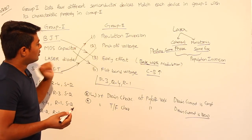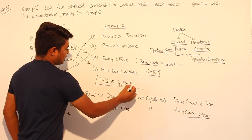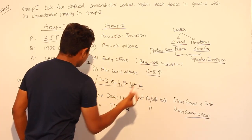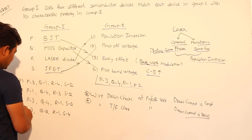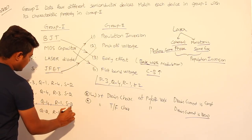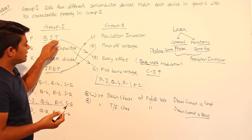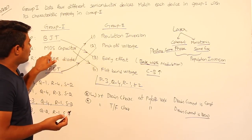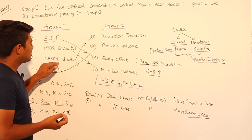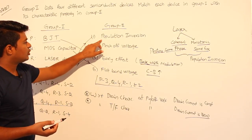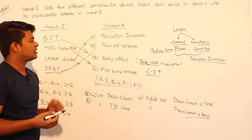So J-FET is related to pinch-off voltage. Looking at the options, for S, it is 2. Therefore: P=3, Q=4, R=1, S=2. Option C is the correct answer for this question. To summarize: BJT is related to early effect, MOS capacitor is related to flat band voltage, laser diode is related to population inversion, and J-FET is related to pinch-off voltage.